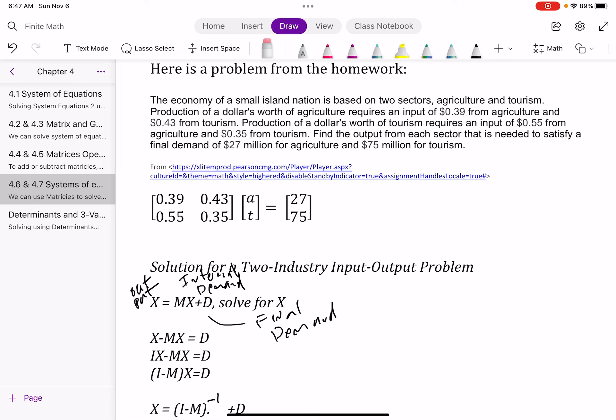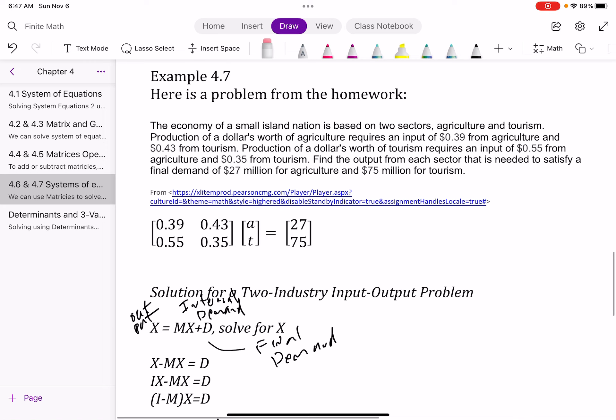And so while we're creating this column, right, we're coming up with two technologies. And so I'm going to try to highlight them here. So you can read the problem. The economy of a small island nation is based on two sectors, agriculture. So I call this A and tourism T. Production of dollars worth of agriculture is required as an input of 0.39 from agriculture and 0.43 from tourism. Production of dollars worth of tourism requires an input of 0.55 from agriculture again.